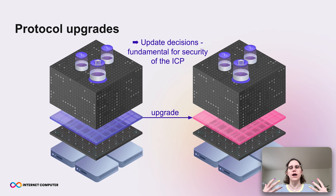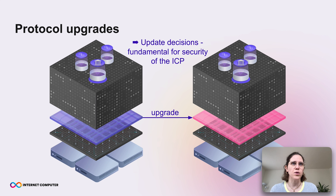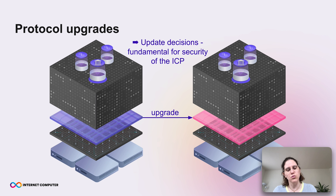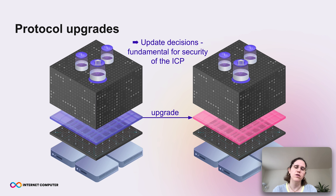So why do we need a governance system for this very complex system? Let's look at two reasons. First, as with every software, we want to be able to evolve the Internet Computer over time. For example, we might want to make a more efficient consensus protocol or we might want to fix some bugs. As you can see on this picture, we want to maybe decide to move from the purple version to the pink version. So someone needs to decide when and how to do such an upgrade and what new version to upgrade to. This is already the first reason why we need a governance system.